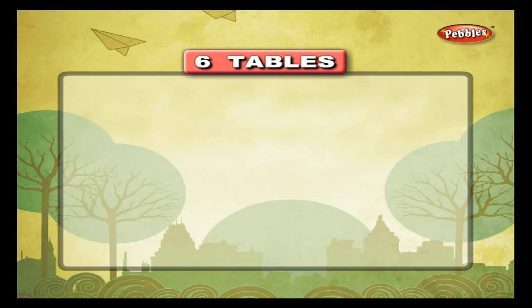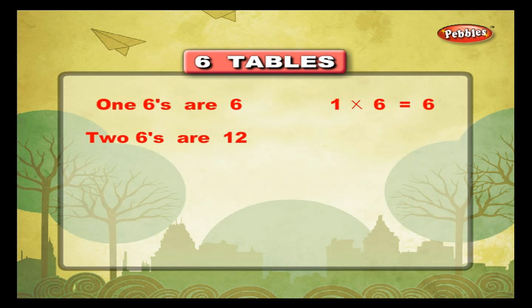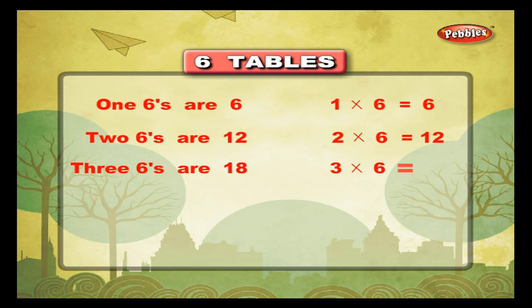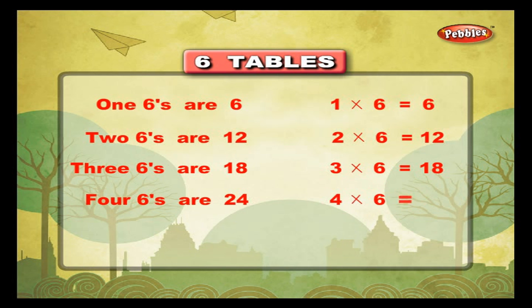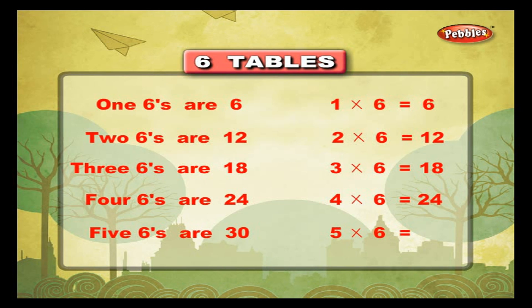Multiplication 6 tables. 1 six is 6, 1 into 6 is equal to 6. 2 sixes are 12, 2 into 6 is equal to 12. 3 sixes are 18, 3 into 6 is equal to 18. 4 sixes are 24, 4 into 6 is equal to 24. 5 sixes are 30, 5 into 6 is equal to 30.